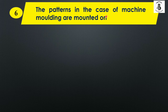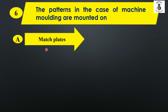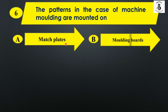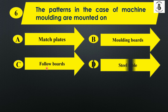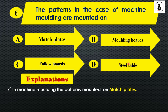The patterns in the case of machine molding are mounted on: Option A: match plates, Option B: folding boards, Option C: follow boards, and Option D: steel tables. In the case of machine molding, the patterns are mounted onto the match plates. So the right answer is Option A.